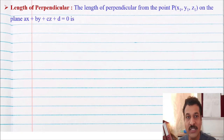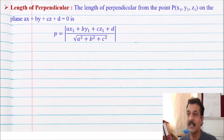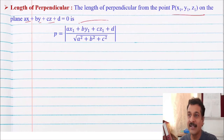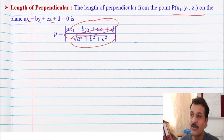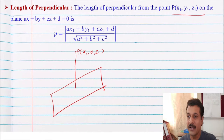Also remember a very important thing: the length of the perpendicular. The length of the perpendicular from the point P(x1, y1, z1) on the plane Ax plus By plus Cz plus d equal to zero is the modulus of (Ax1 plus By1 plus Cz1 plus d) divided by the square root of (A squared plus B squared plus C squared). It means x, y, z are replaced by the point in the equation, divided by the square root of A squared plus B squared plus C squared. This is the length of the perpendicular from point P to the plane.